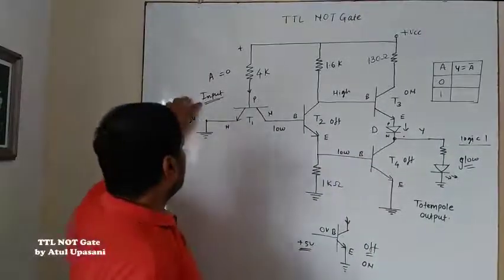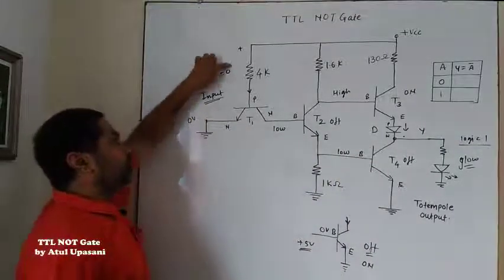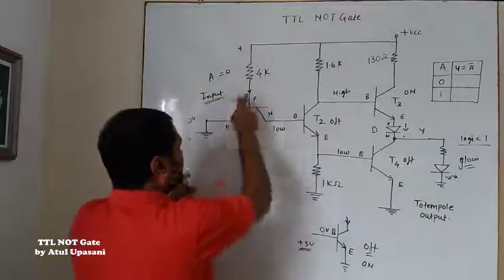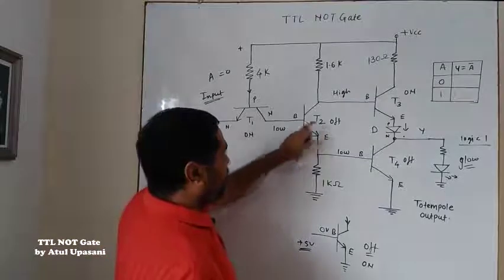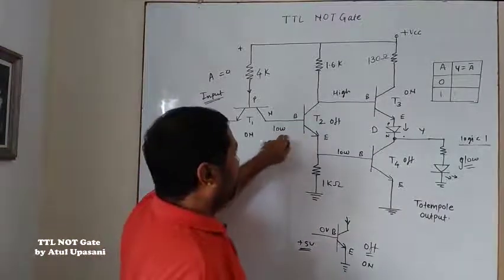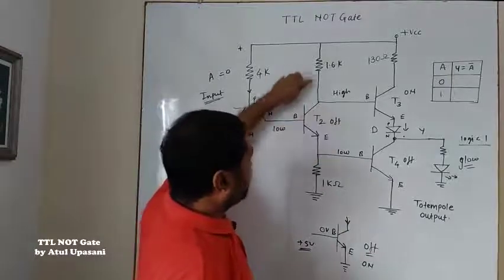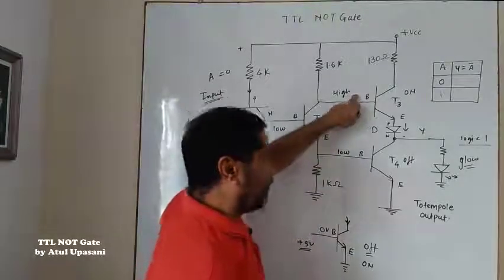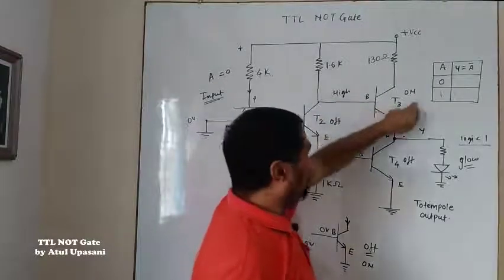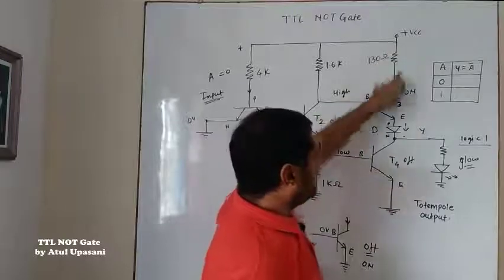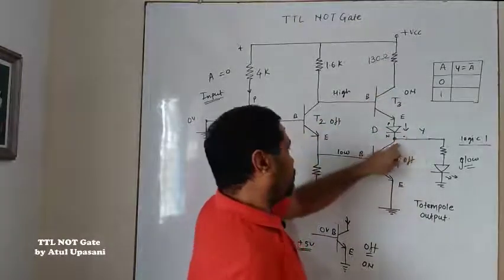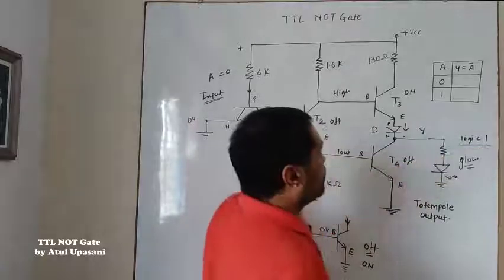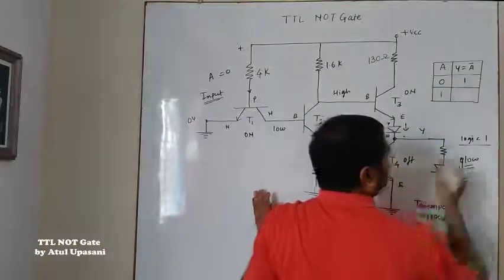So to summarize case 1: input A was 0, T1 was ON, all current sank to ground, no voltage at the base of T2, so T2 was OFF. With T2 OFF, no current through its resistor, so high voltage at the base of T3, making T3 ON and T4 OFF. Current flows through the diode to the output, the LED glows, and output is logic 1.